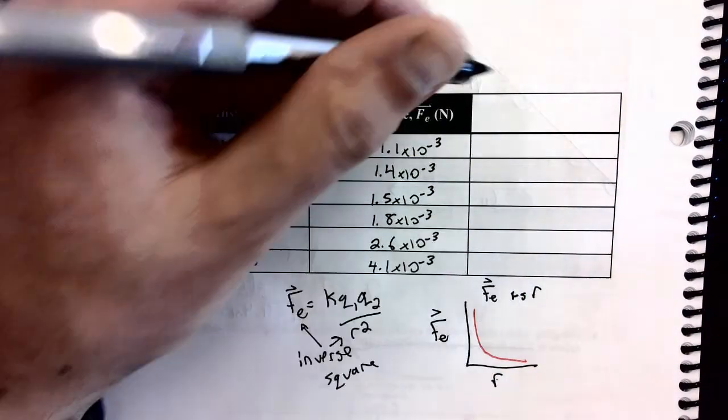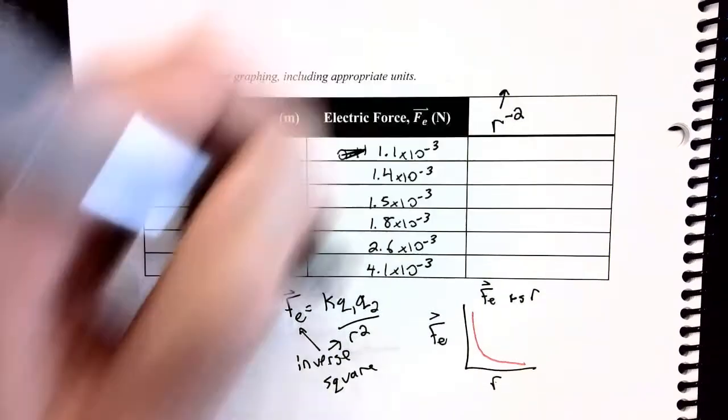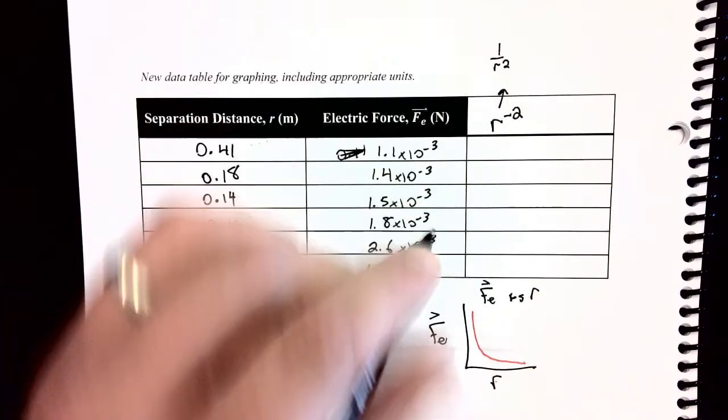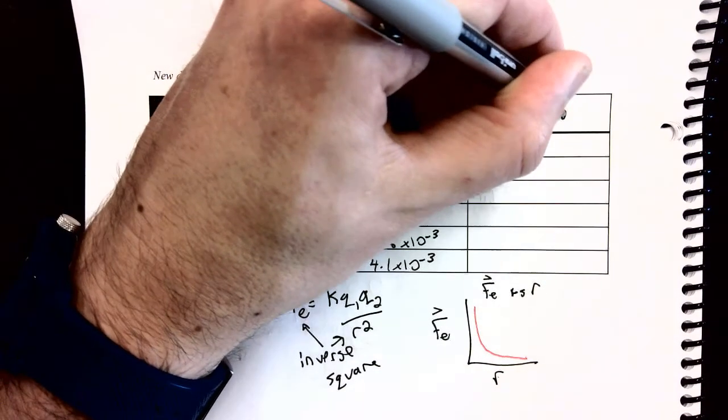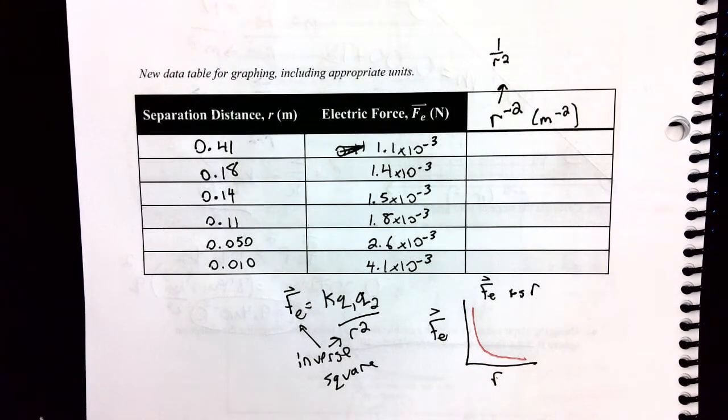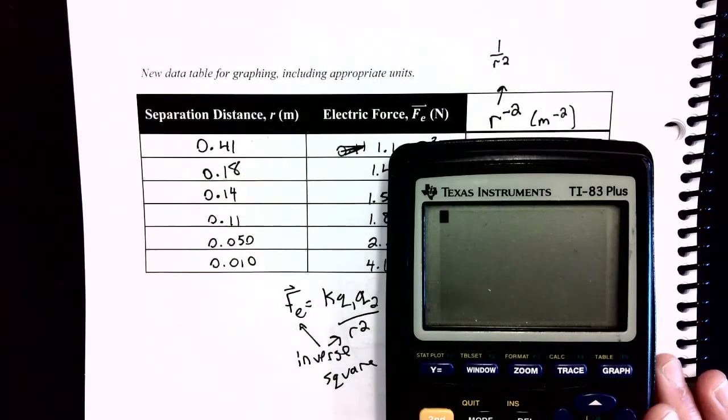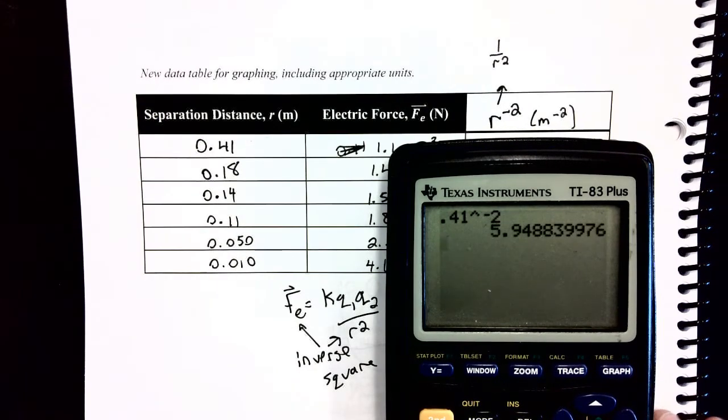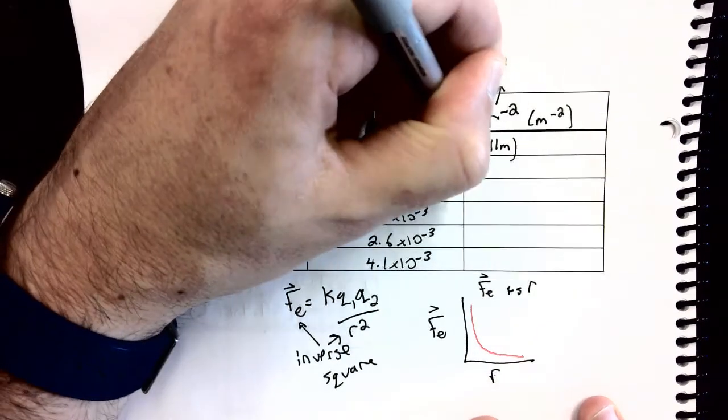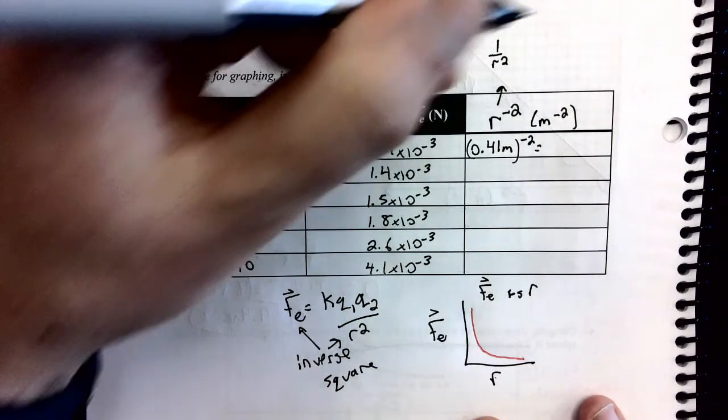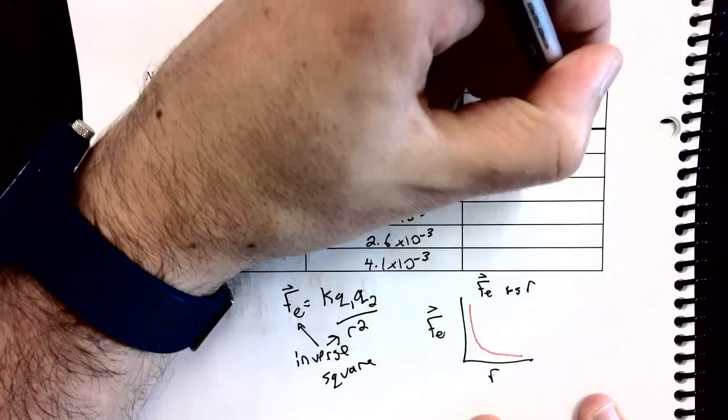So here's where I'm going to put the data. I'm going to call it r to the negative 2, which is how we inverse square something. You could also put, if you wanted to, 1 over r squared, but r to the negative 2 is a little easier. And I'm going to put the units that this will come out in as meters to the negative 2. Now what I will do on each of my separations is in my calculator, go and put them to the power of negative 2. So I'll write out for the first one what I did: 0.41 meters to the power of negative 2 will give me a new value that I'm going to graph of 5.9.